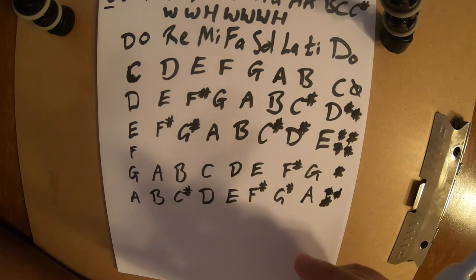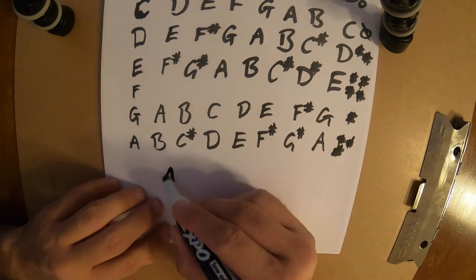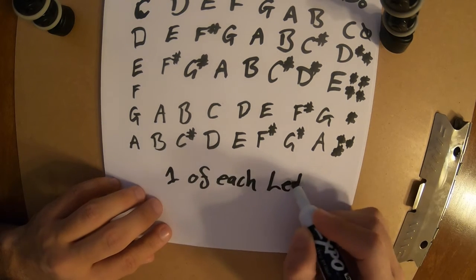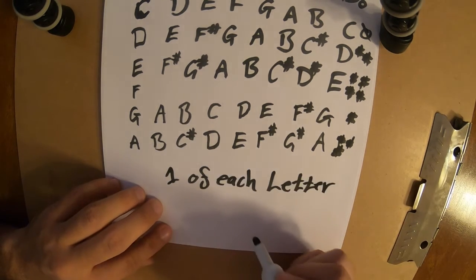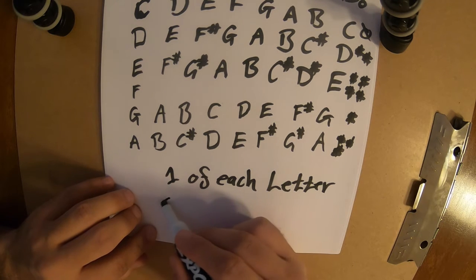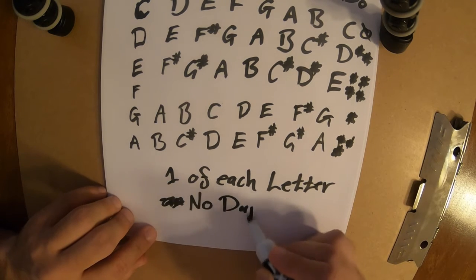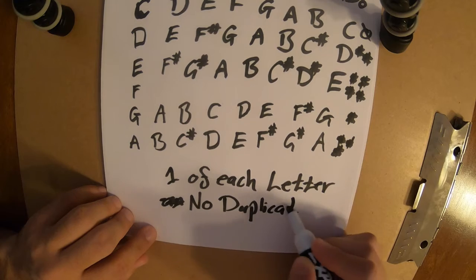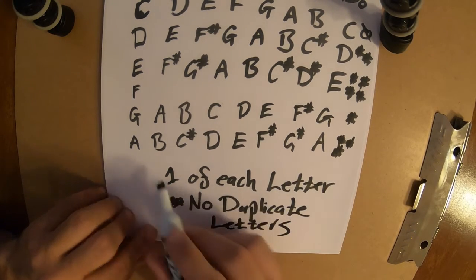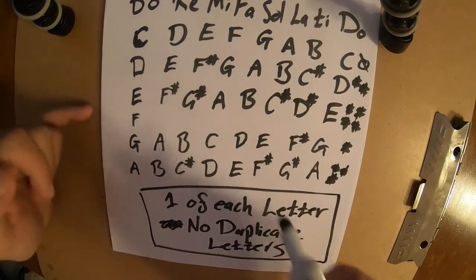So F is a little bit weird because there's a couple of rules that I didn't bring up yet. But you have to have one of each letter and you cannot have any, well, how do I write this? No duplicate letters. So F is going to seem a little bit weird when we do it.